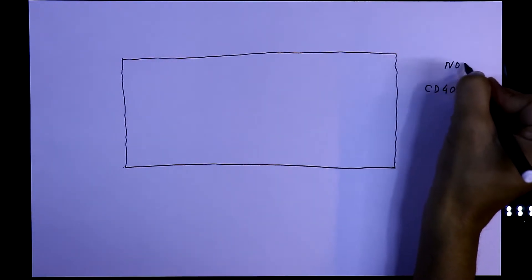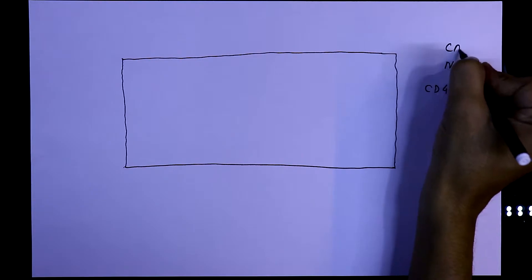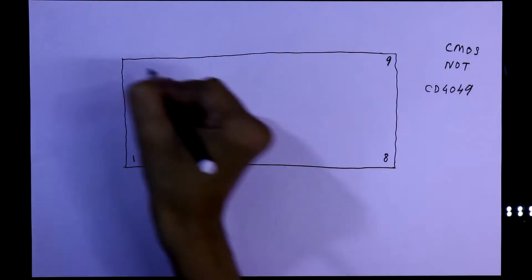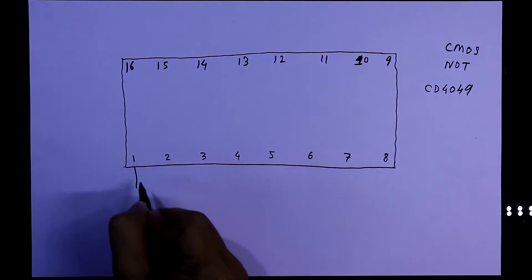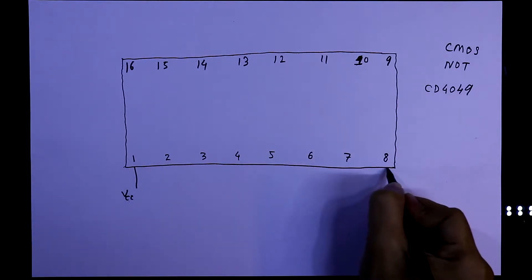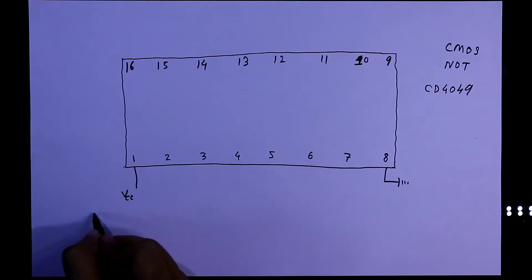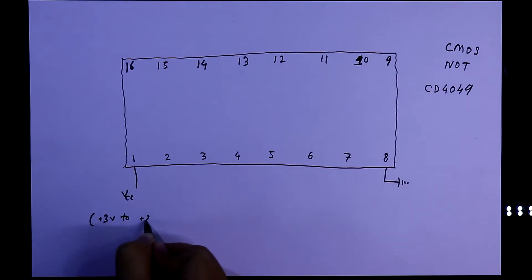CD4049 is a NOT gate IC, a CMOS IC. It has 16 pins. Pin 1 is VCC and pin 8 is ground. We can apply from plus 3 volt to plus 20 volt.